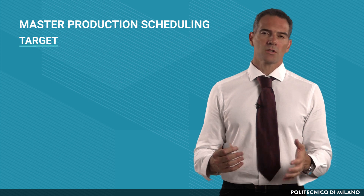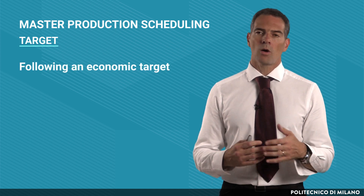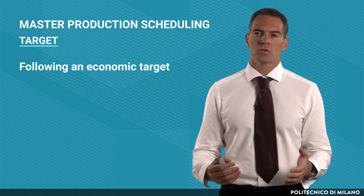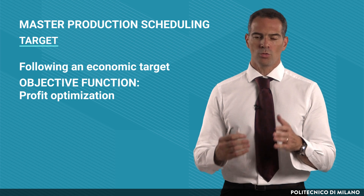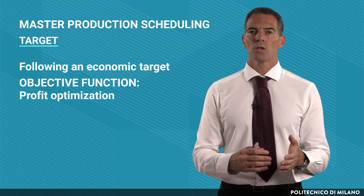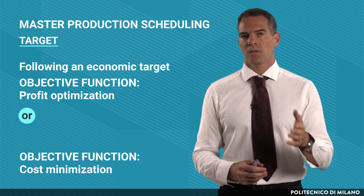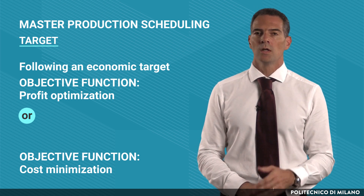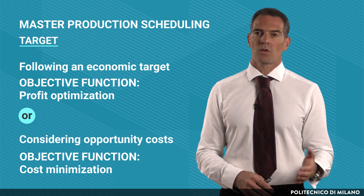in Master Production Scheduling you basically follow an economic target — a profit optimization as the objective function. Or, if you do not want to pursue profit optimization, you can use a cost minimization objective function, which in this case implies that you also have to consider opportunity costs such as lost sales costs.